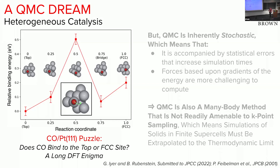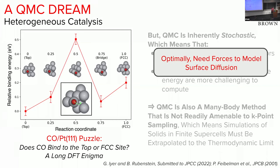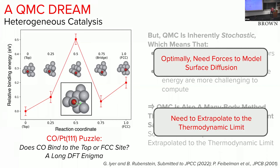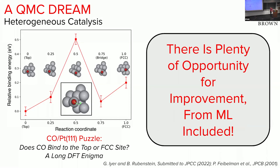Some people have used QMC for this problem, and in my group we've also looked at it. But if you really want to do catalysis, you have to obtain forces and be able to move atoms across the surface, with very high accuracy and extrapolation to the thermodynamic limit. So for these systems, which are in some sense a chemist's dream, we need to add more functionality to what QMC can do. There is plenty of room for including ML.